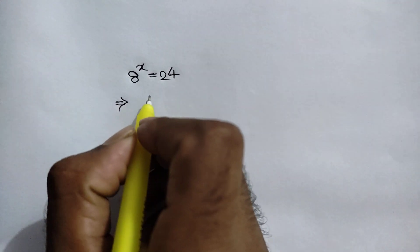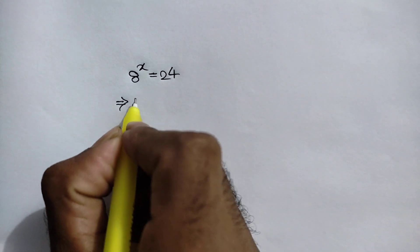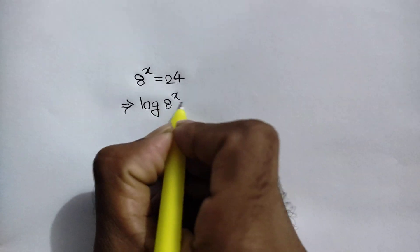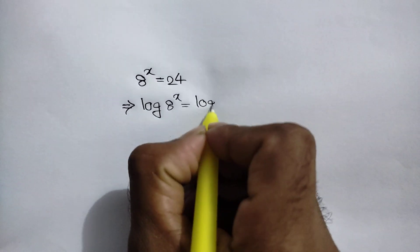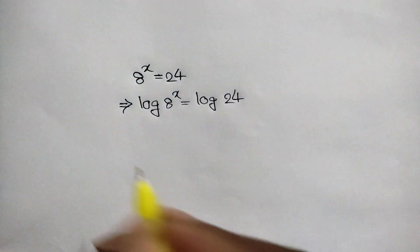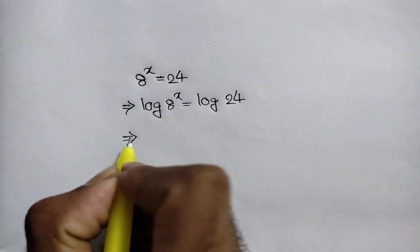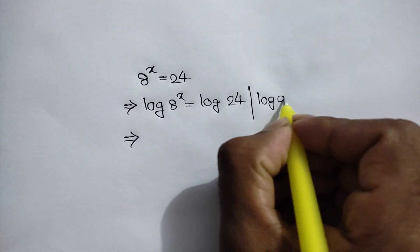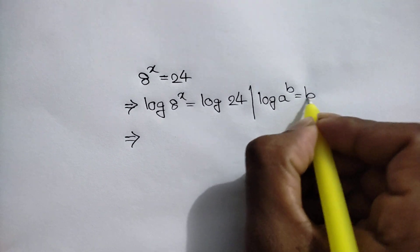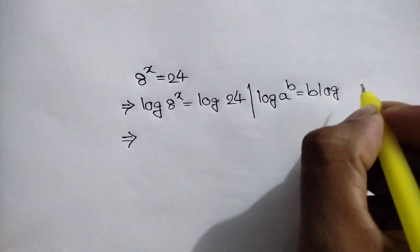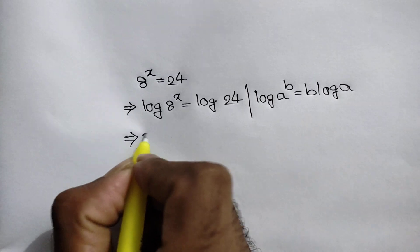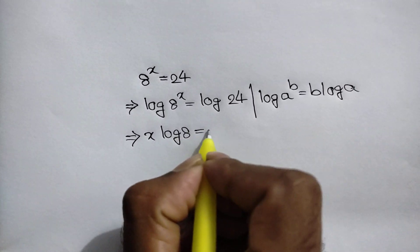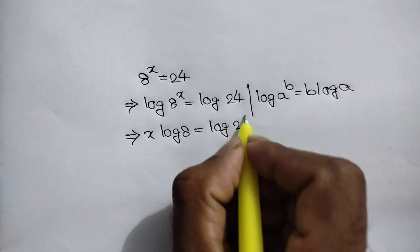Taking log of both sides, we can write log 8^x equals log 24. Here we can apply the rule: log a^b equals b log a. So we can write x log 8 equals log 24.